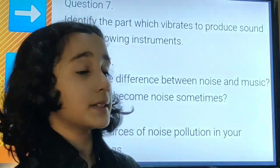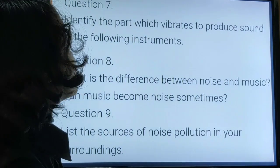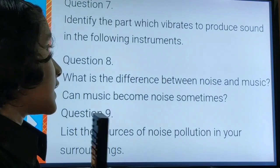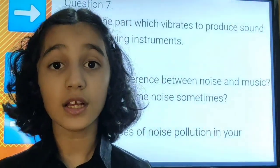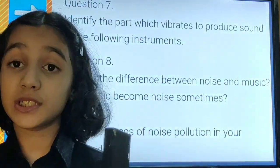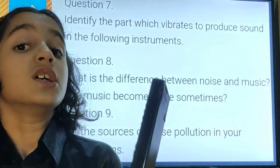Question number 7, identify the part which vibrates to produce sound in the following instruments: dholak, sitar and flute. In dholak the vibrating part is stretched membrane, in sitar the vibrating part is strings, and in flute the vibrating part is the air column.